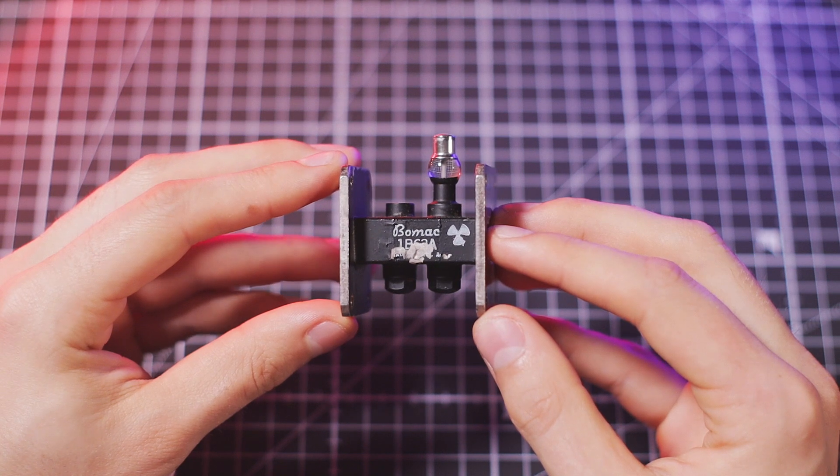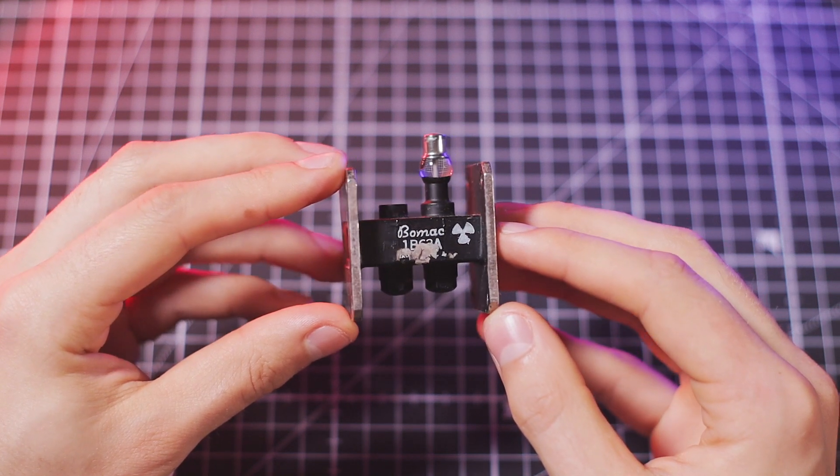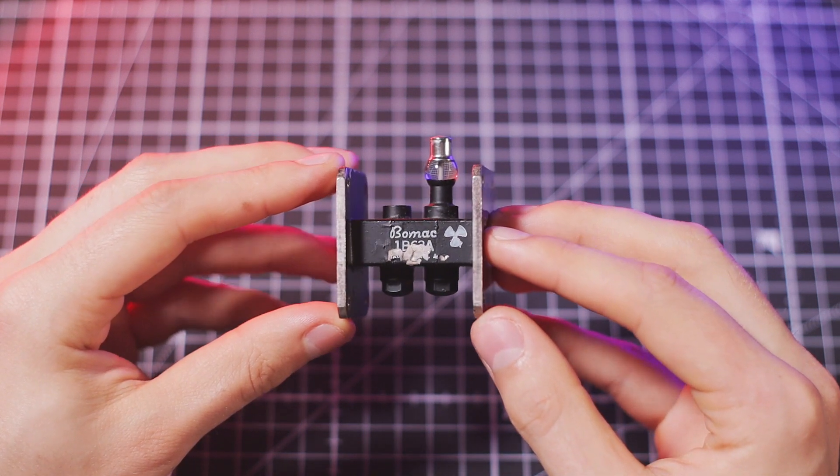For decades, tubes have been a key component of electrical devices such as radios, amplifiers, and many more. Some of these tubes contain radioactive elements which improved the ionization process and also made them radioactive.